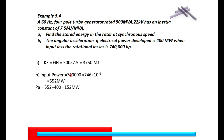The electrical power developed — that is the output — is 400 MW. The input is 7,400,000 HP, which needs to be converted to watts by multiplying by 746, then to megawatts by multiplying by 10⁻⁶. The mechanical power input to the generator comes out to 552 MW. Since the output is 400 MW, the accelerating power is 552 minus 400, which is 152 MW.